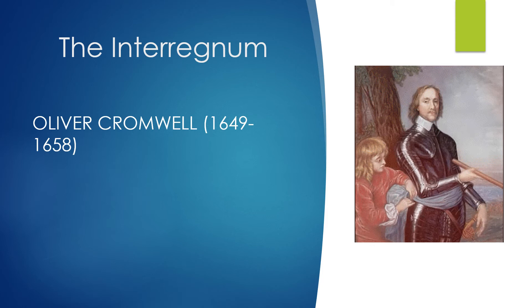The period with no king, from 1649 to really 1660, is called the Interregnum, or the Interruption of the Monarchy. Oliver Cromwell, that Roundhead leader, became the leader of what we call the English Republic and later took the title Lord Protector. He began to enforce Puritan rules: he forbids card playing, dancing, theaters were closed down, no more sports. Essentially, the English were supposed to focus on prayer. This didn't go over well because the majority of the English were Anglican and generally happy with their religion.